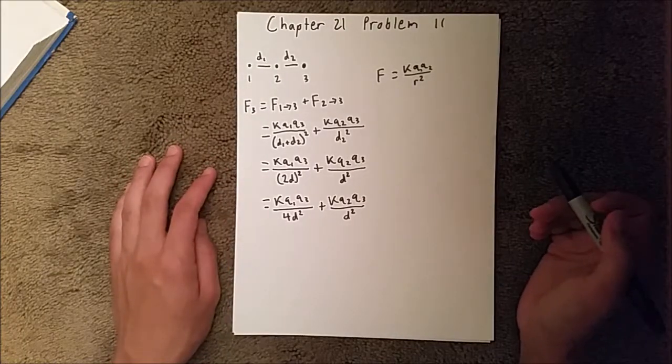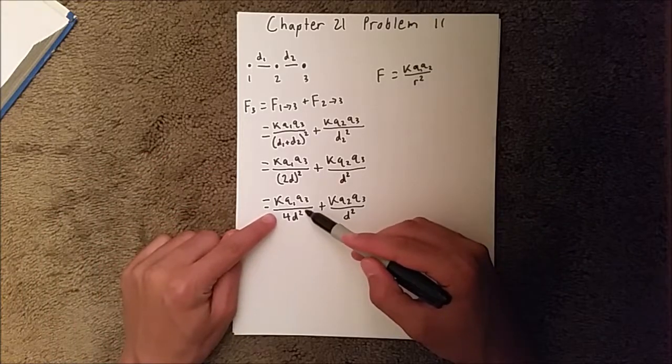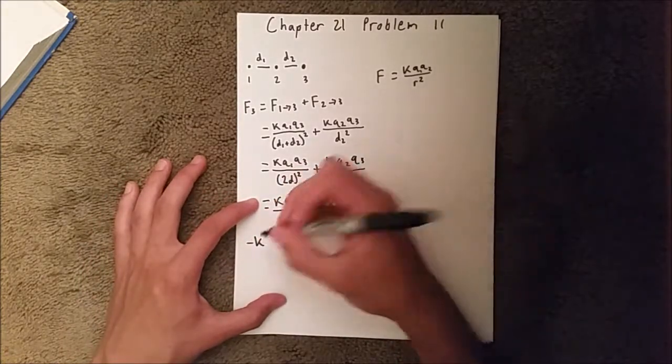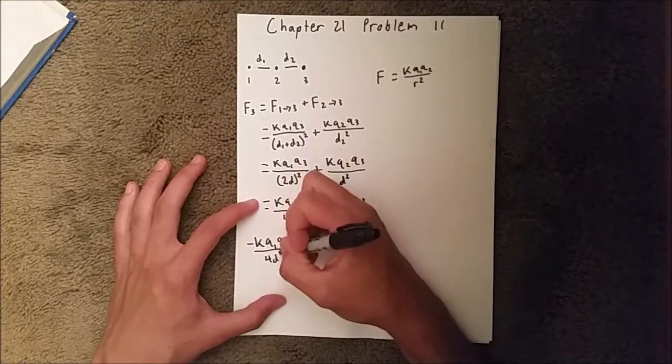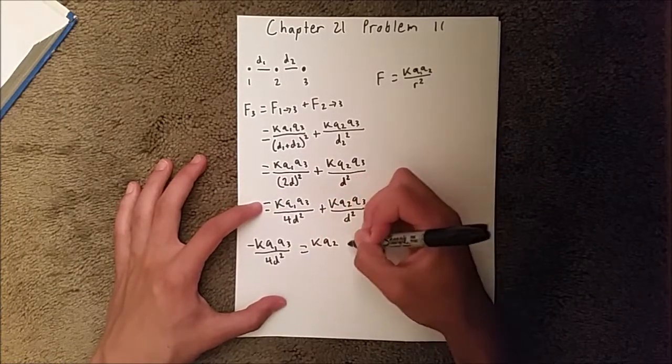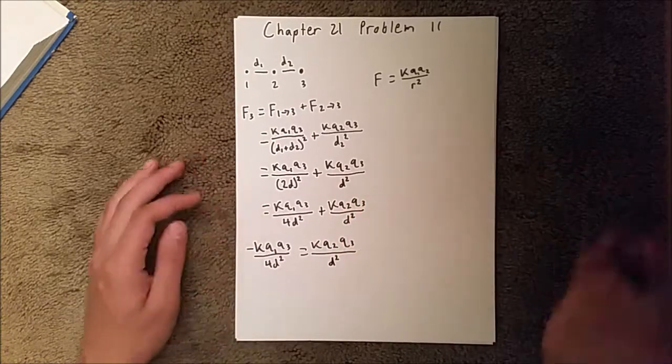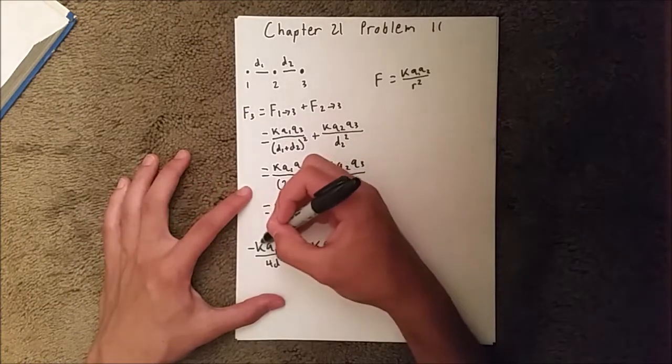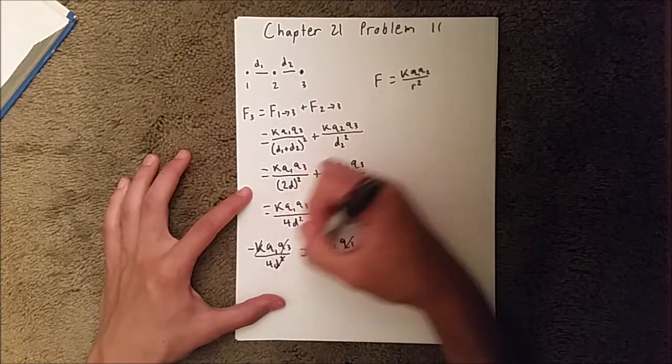And so since we're trying to find the ratio between q1 and q2, we're actually going to subtract this quantity to the other side. So we're going to get negative kq1q3 over 4d squared, and that's going to be equal to kq2q3 over d squared. And if you look, we actually have a lot in common on both sides, so we can cancel stuff out. We can cancel out k on both sides, charge 3 on both sides, and d squared on both sides.